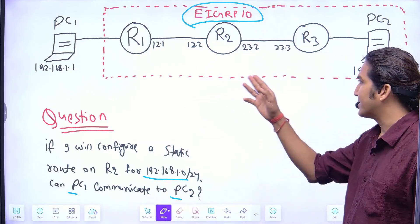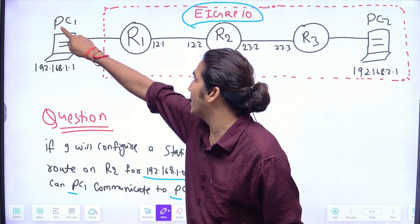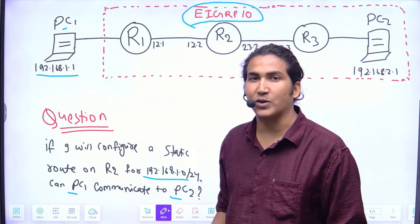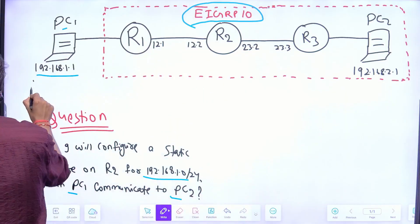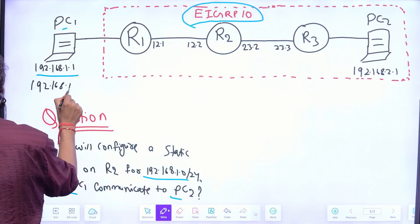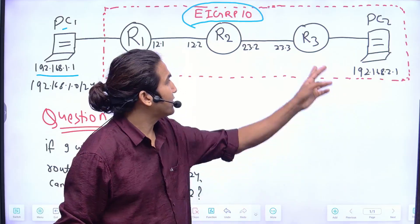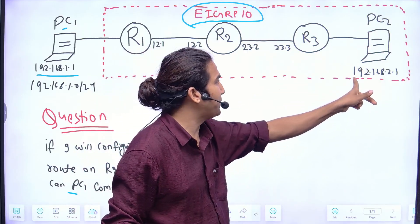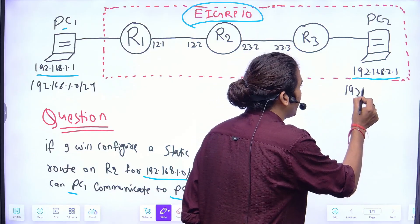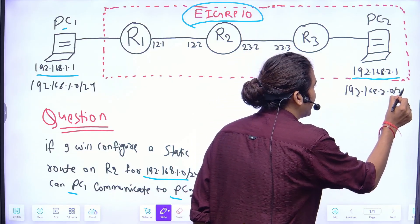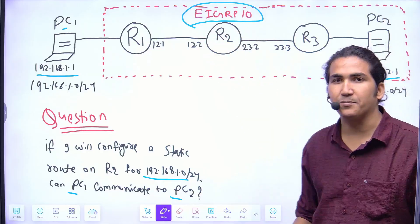All the routers are connected together. I have one LAN device connected on router R1 which is PC1 using IP 192.168.1.1, so the LAN subnet on R1 is 192.168.1.0/24. Similarly, one LAN device is connected on router R3 which is PC2 using IP 192.168.2.1, so the LAN subnet there is 192.168.2.0/24. To exchange routes between routers I am running EIGRP AS number 10.